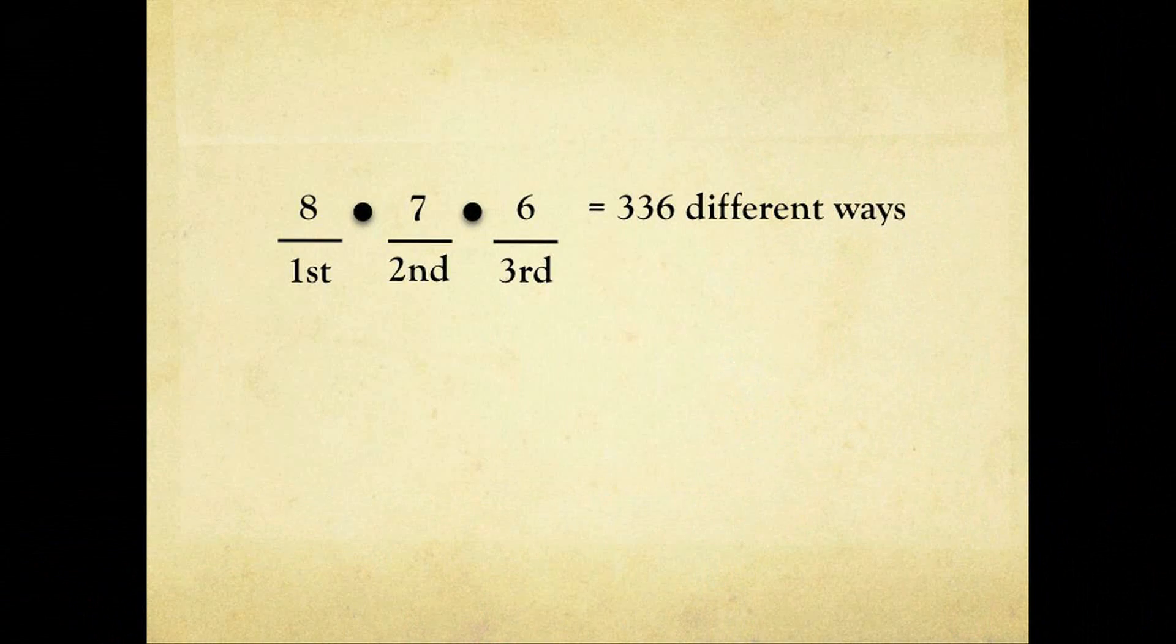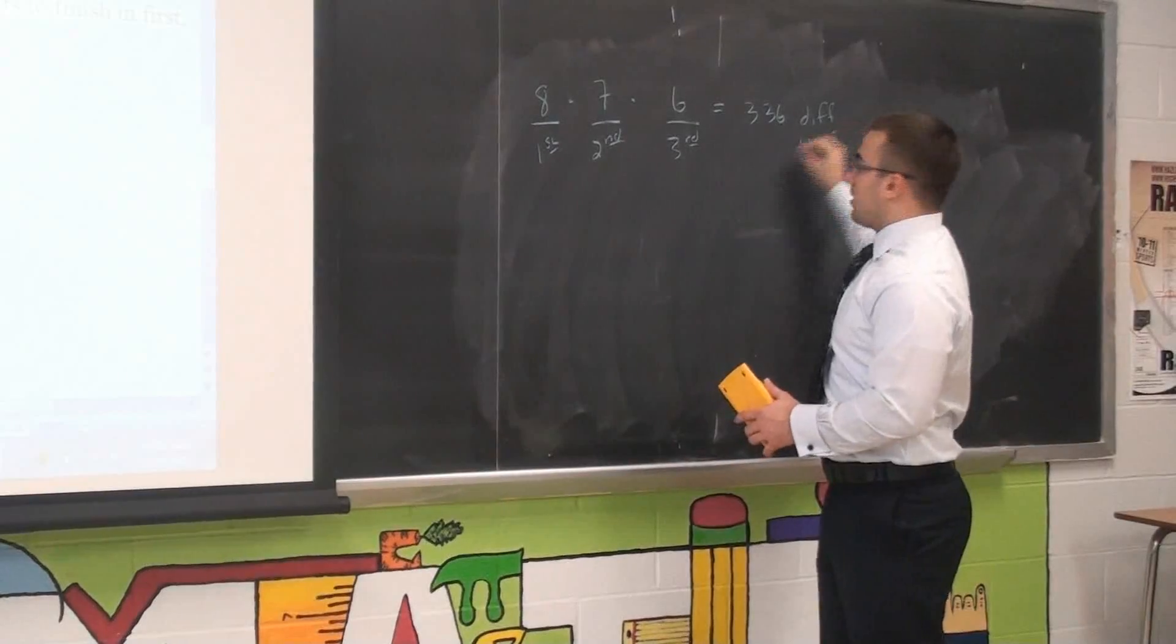And we get 336 different ways, which would be B.